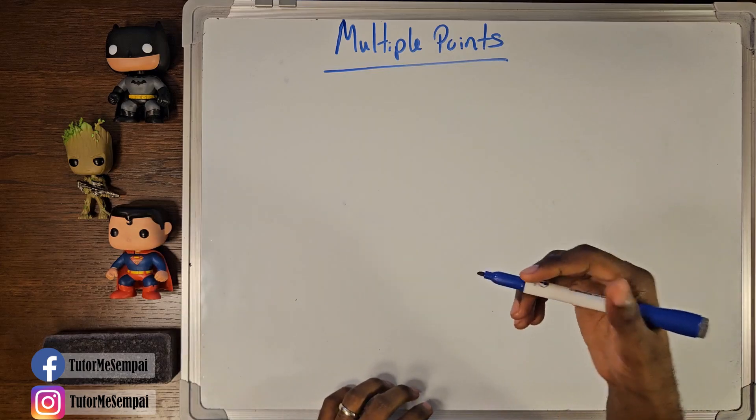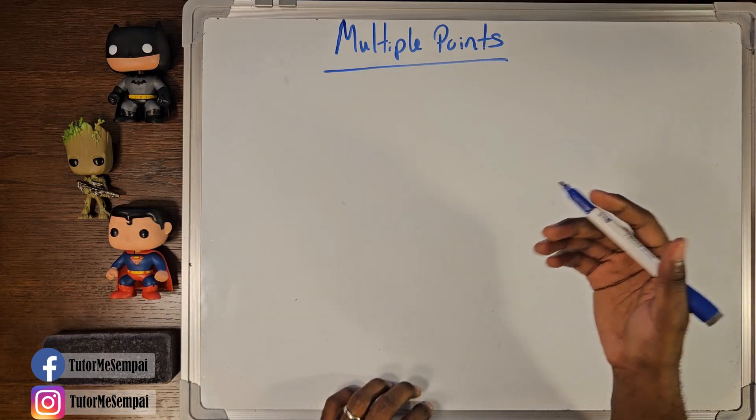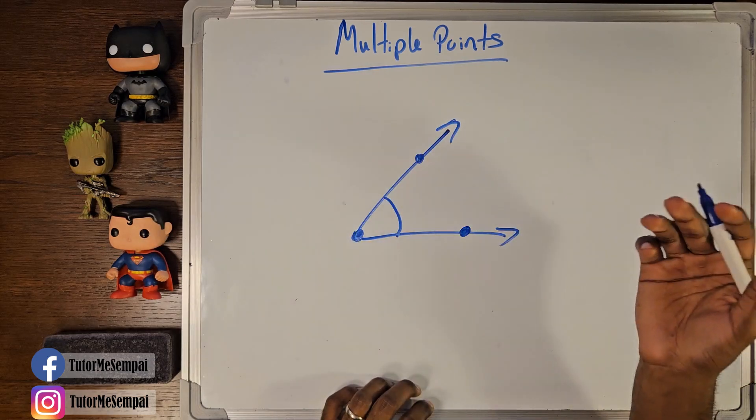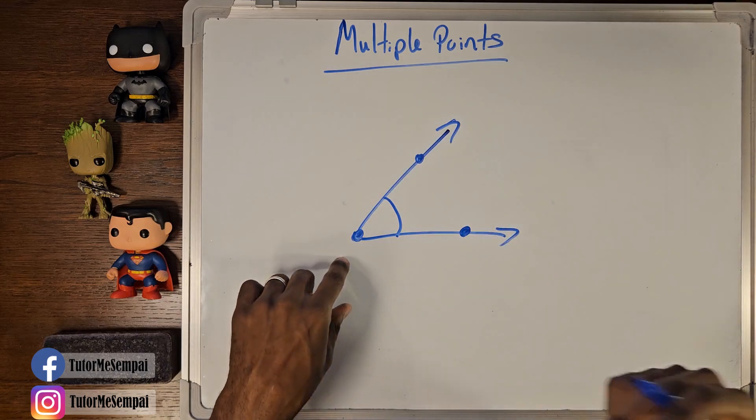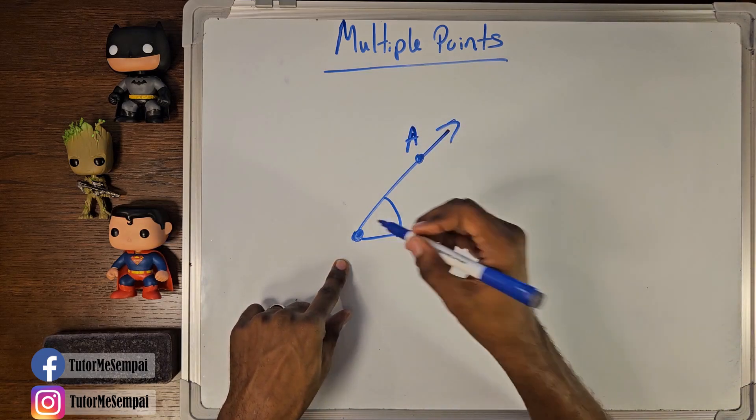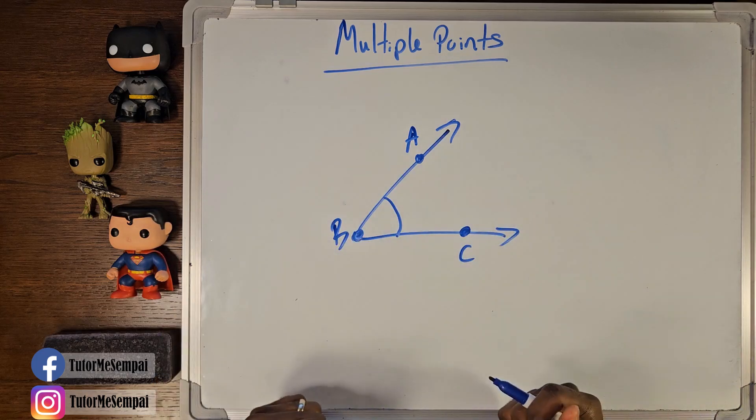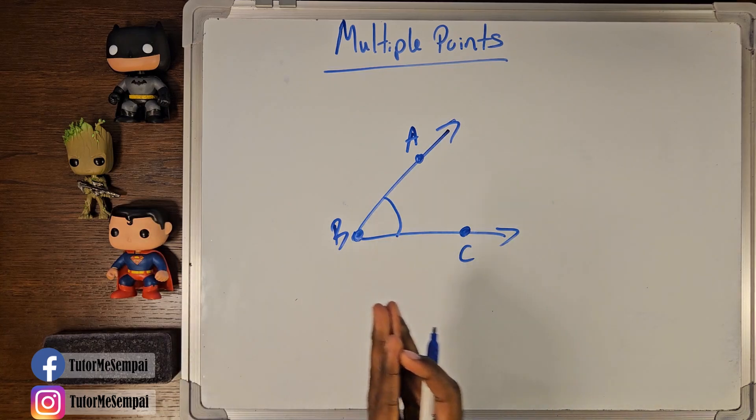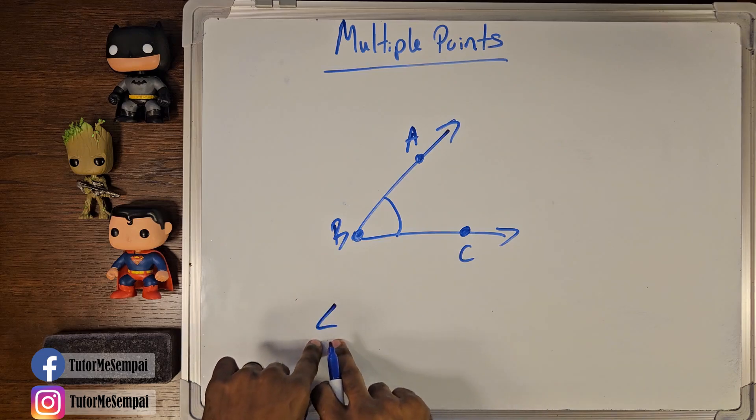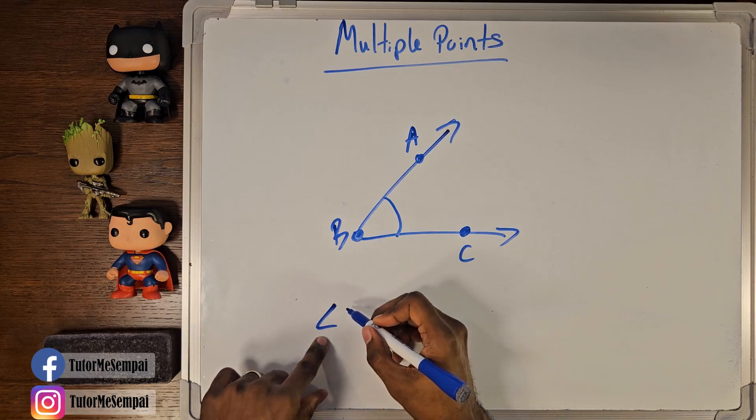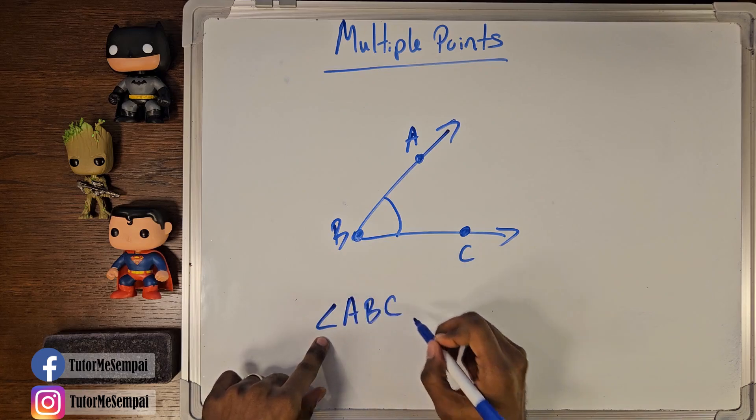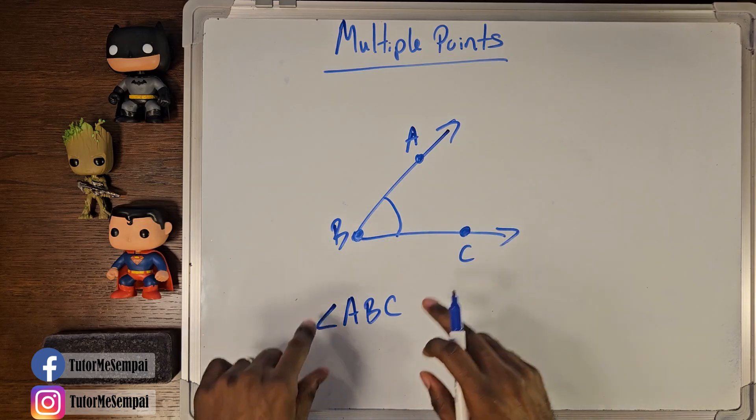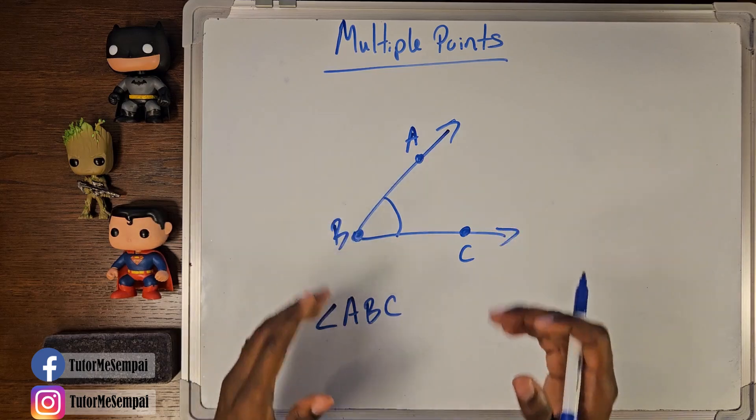It can be acute, it could be an obtuse angle, it doesn't really matter, but it's going to have this type of setup. So notice we have our two rays connected to our vertex, and we're going to have three points which we're going to just name A, B, and C to make things simple. When we have our angle looking like this, we have a very easy way of naming this particular angle. And that's going to be, you're going to draw a small angle like this, and it's going to say A, B, C. This is how you would name this angle. This is one way you can name this particular angle.